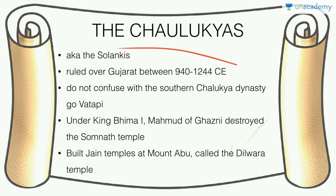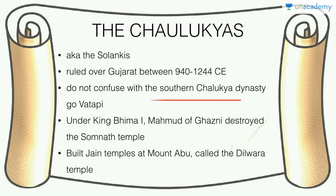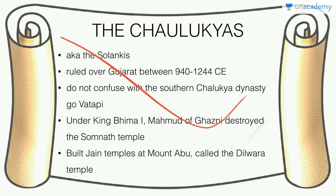The Chalukyas of Gujarat, also known as Solankis, ruled Gujarat from about 940 to 1244 CE — not to be confused with the Southern Chalukya dynasty. Under King Bhima I, Mahmud of Ghazni destroyed the Somnath temple. This is a very important and contentious point in history. The Chalukyas also built Jain temples at Mount Abu, called the Dilwara temples.